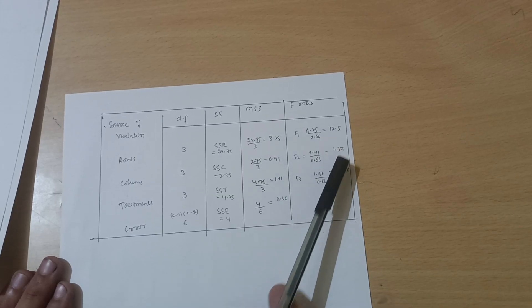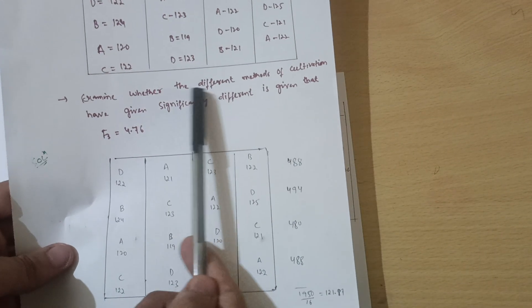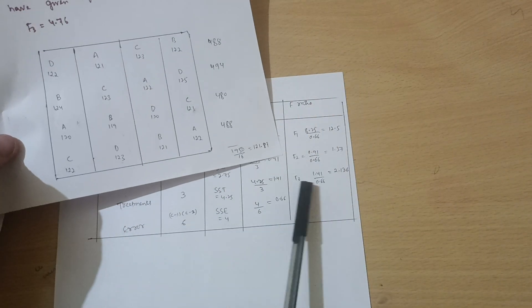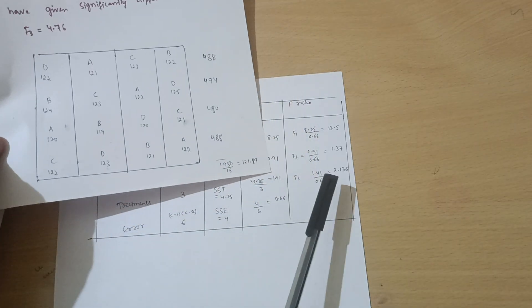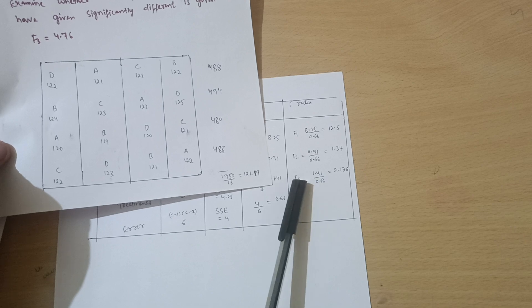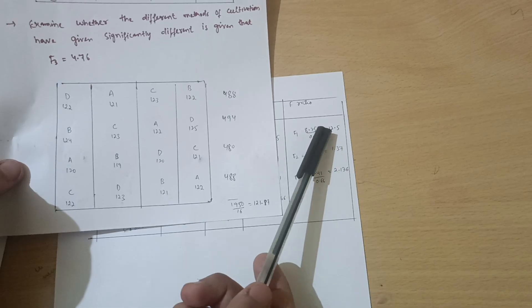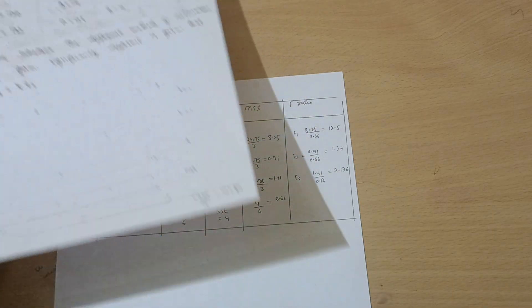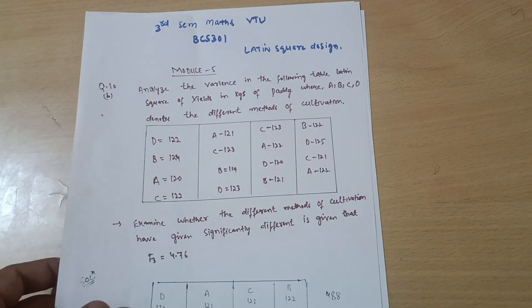The question asks whether different methods of cultivation gave significantly different results, given critical F3 = 4.76. Our calculated F3 = 2.136, which is less than 4.76, so the null hypothesis is accepted for treatments - the methods of cultivation do not differ significantly. F2 = 1.37 is also less than 4.76, so also accepted. However F1 = 12.5 is greater than 4.76, so the row effect is rejected. This completes the Latin Square Design problem. Comment if you have doubts, and best of luck for your examinations.